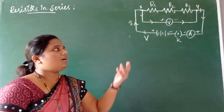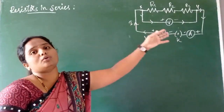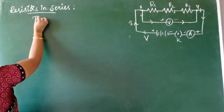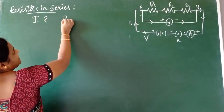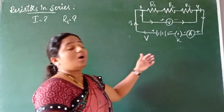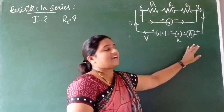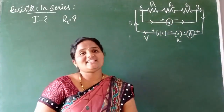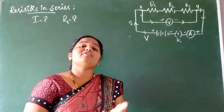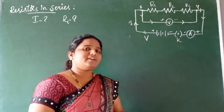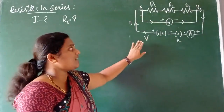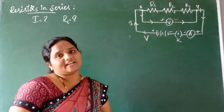Each resistor can have assumed values such as 1 ohm, 2 ohm, or 3 ohm. We need to calculate the current value and the equivalent resistance. To do this, we connect the ammeter at different positions in the circuit, since the ammeter measures the current flowing in the circuit. First, plug in the key and note the ammeter reading.